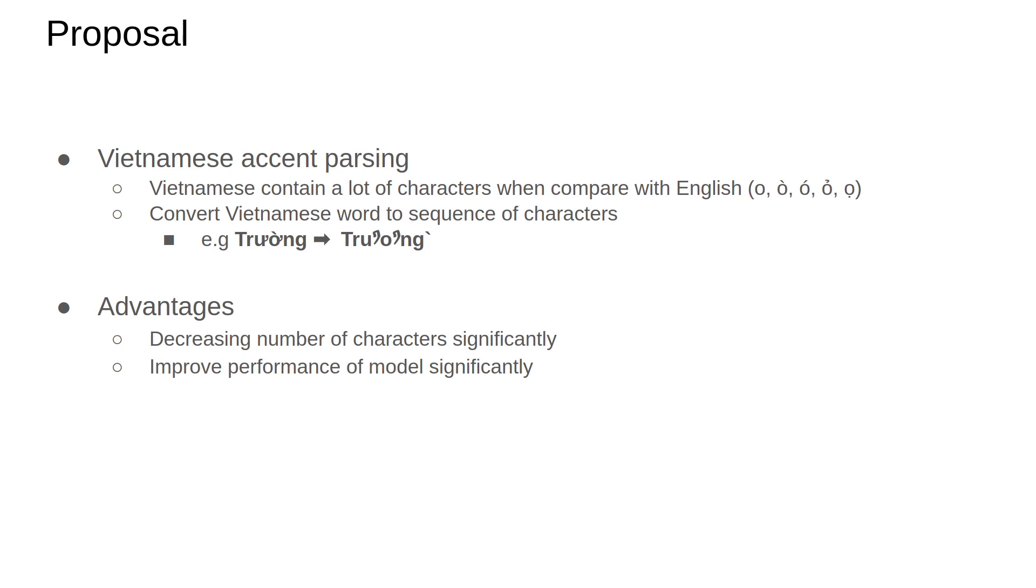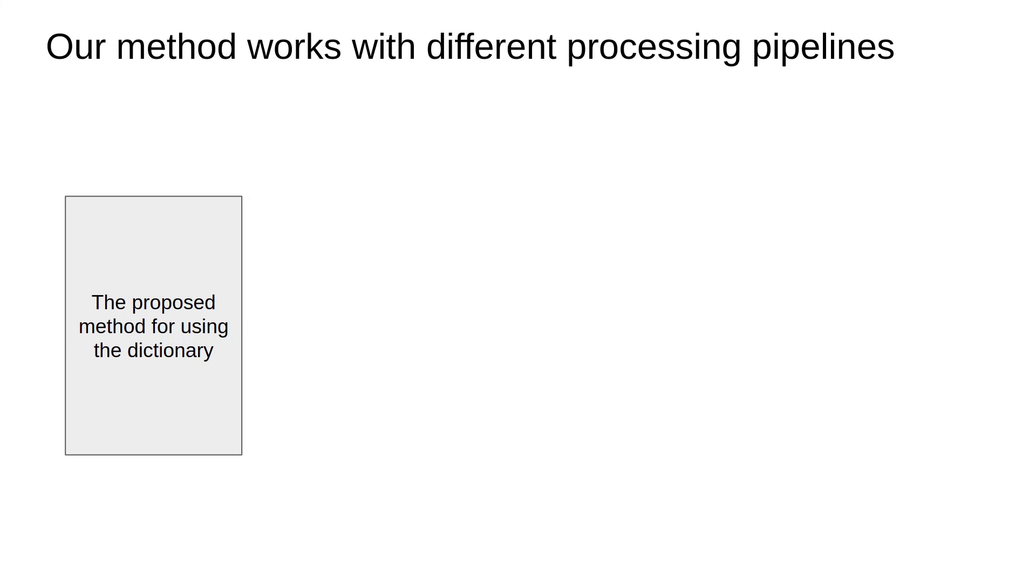This approach has many advantages, such as decreasing number of characters and improving performance of models significantly. We proposed a novel method for utilizing the dictionary. This method can be incorporated into different scene text spotting pipelines. Here we consider two state-of-the-art processing pipelines called ABCNet and MaskTextSpotter v3.